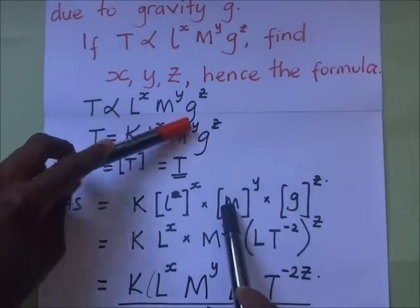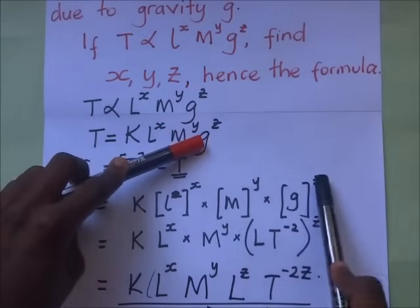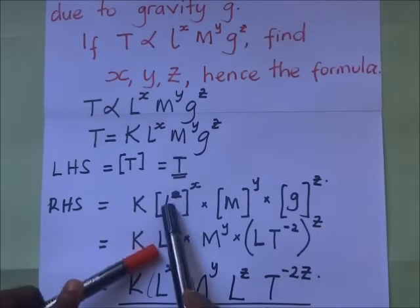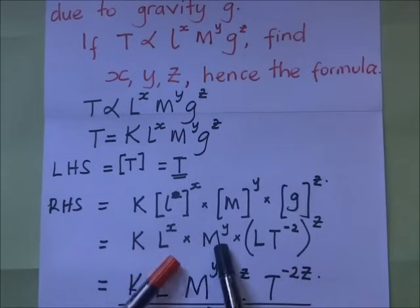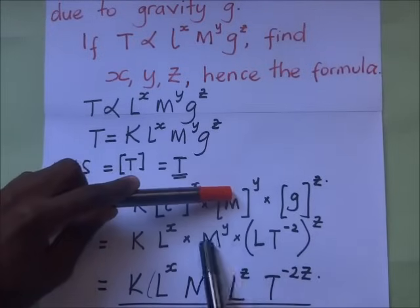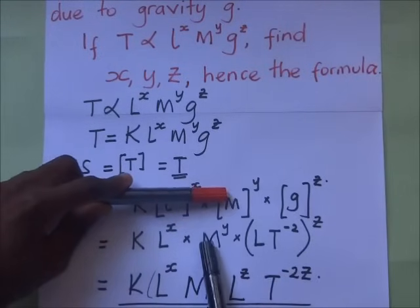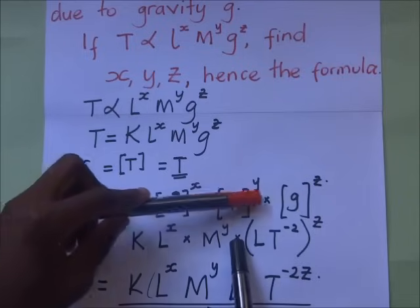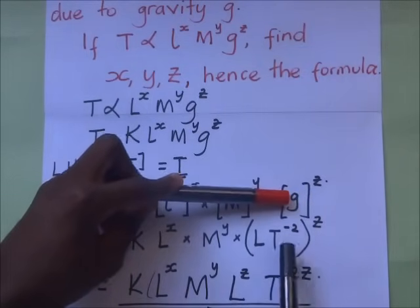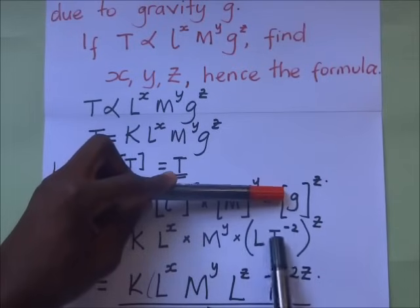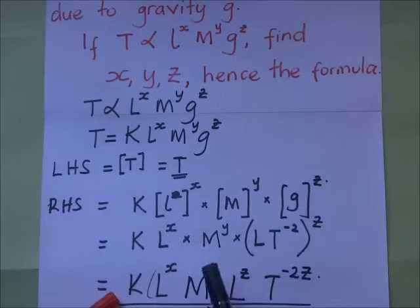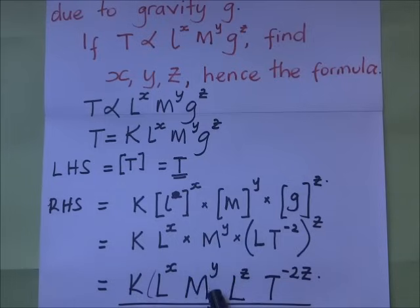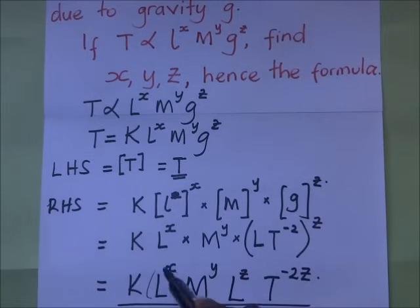Continuing on the right-hand side: mass M to the power y, multiplied by the dimensions of acceleration due to gravity, which are L·T^(−2), all to the power z. In the next step we simplify this further to get: L^x · M^y · L^z · T^(−2z).